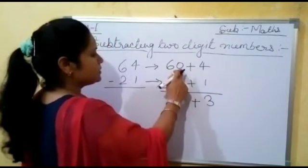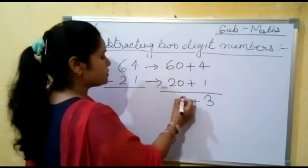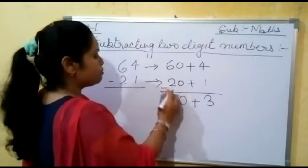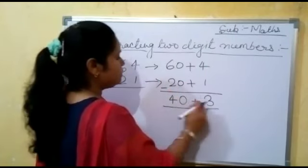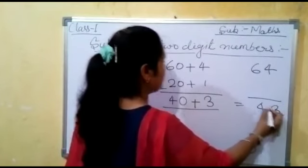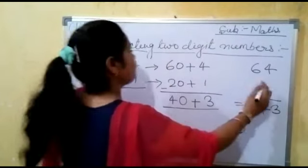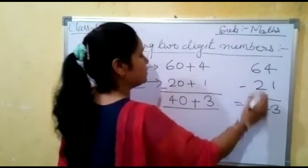Now we subtract 4 minus 1, which becomes 3. We write a plus sign here. 0 minus 0 becomes 0, and 6 minus 2 becomes 4. So 40 plus 3 becomes 43. It means 64 minus 21 equals 43.